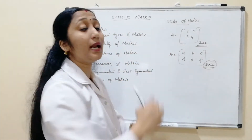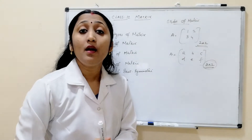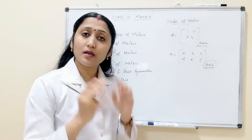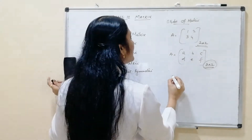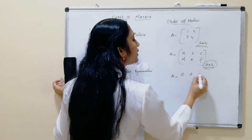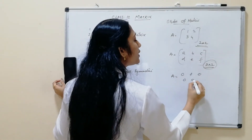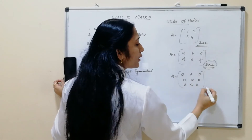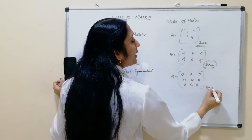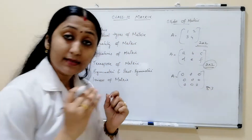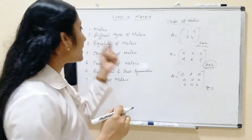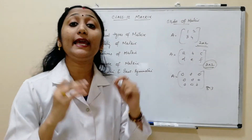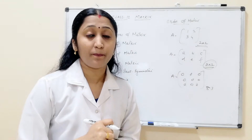The last type is the zero matrix. A zero matrix is one where all elements are zero. For example, a 3×3 matrix with all nine entries equal to zero is called a zero matrix. These are the different types of matrix.